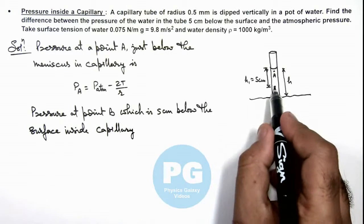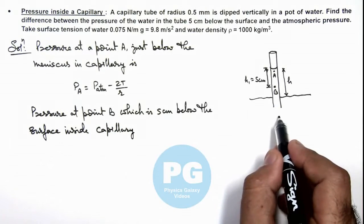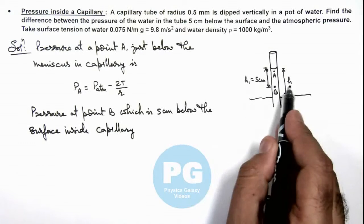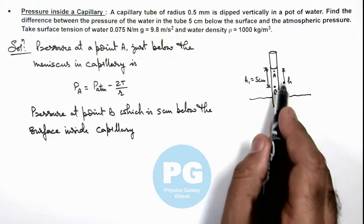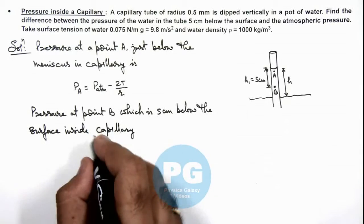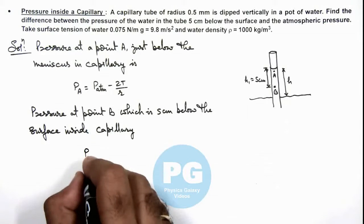Here, this point B can be at different positions depending on whether h is 5 or more than 5 or less than 5.